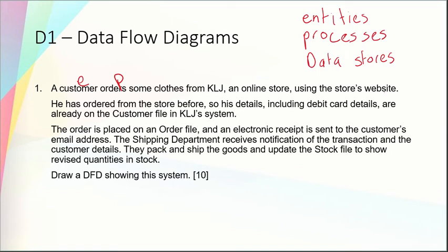Next it says he has ordered from the store before, so his details including debit card details are already on the customer file in KLJ's system. Now the customer file is a data store — it's where something is being saved. So I'll mark that as DS. That is a data store, presumably an electronic one. Next, the order is placed on an order file, so again that straight away gives us another data store.